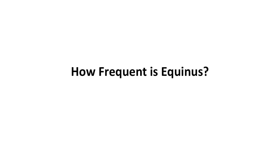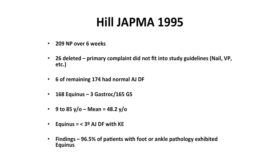How frequent is Equinus? Hill looked at the frequency of Equinus in JAPMA 1995. In their study, they looked at 209 new patients over six weeks. Twenty-six patients were deleted because their primary complaint did not fit into study guidelines. Of the remaining 174 patients, only six had normal ankle joint dorsiflexion — resulting in 168 patients with Equinus: three with gastroc Equinus and 165 with gastroc-soleal Equinus. The age range was 9 to 85 years old with a mean of 48.2 years. Using a strict definition of less than three degrees ankle joint dorsiflexion with the knee extended, 96.5% of patients with foot or ankle pathology exhibited Equinus deformity.